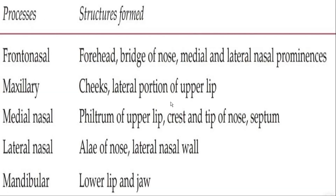To revise what forms what: the frontonasal process forms the forehead, the bridge of the nose, and the median and lateral prominences. The maxillary process forms the cheek and the lateral portion of the upper lip. The median nasal process forms the philtrum of the upper lip, the crest and tip of the nose, and also the septum. The lateral nasal process forms the ala of the nose and the lateral nasal wall. The mandibular process forms the lower lip and the jaw.